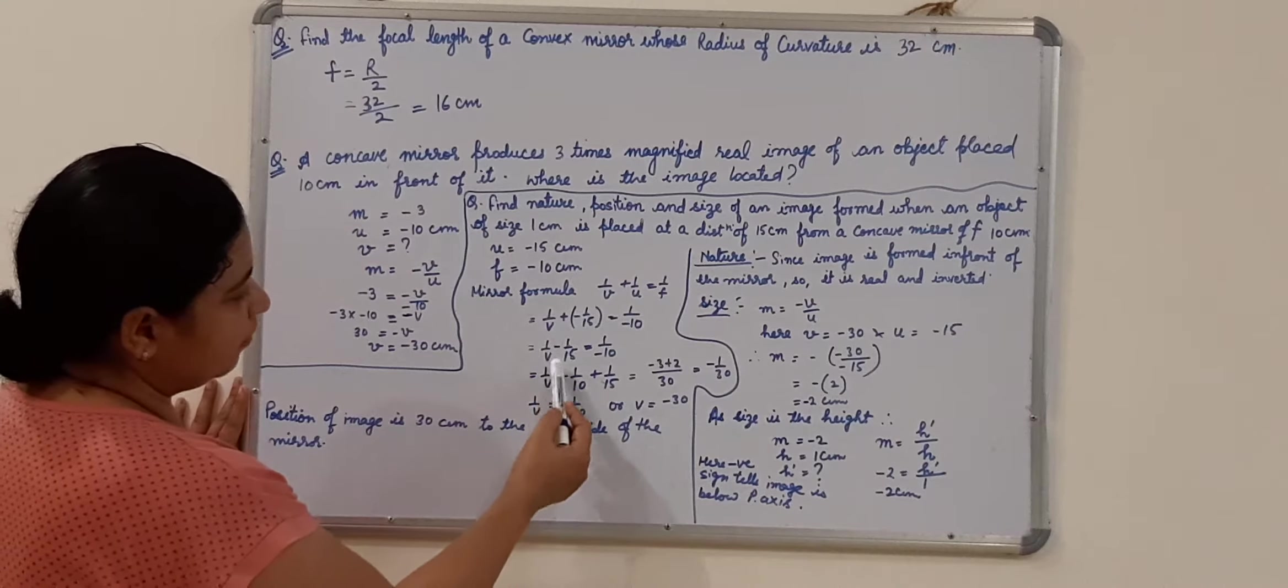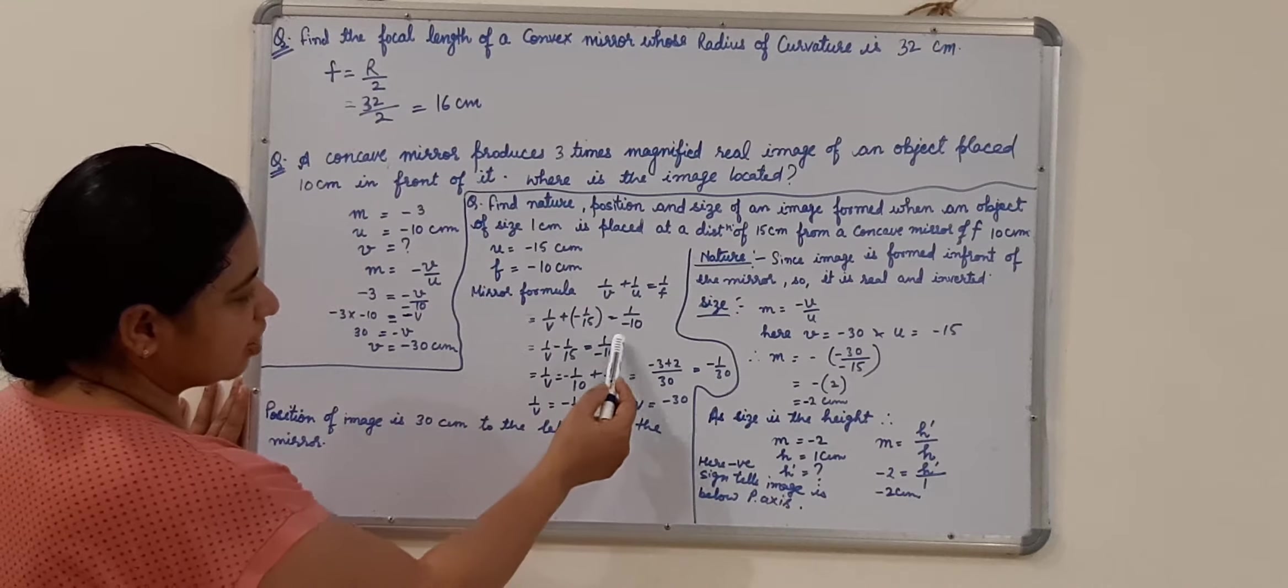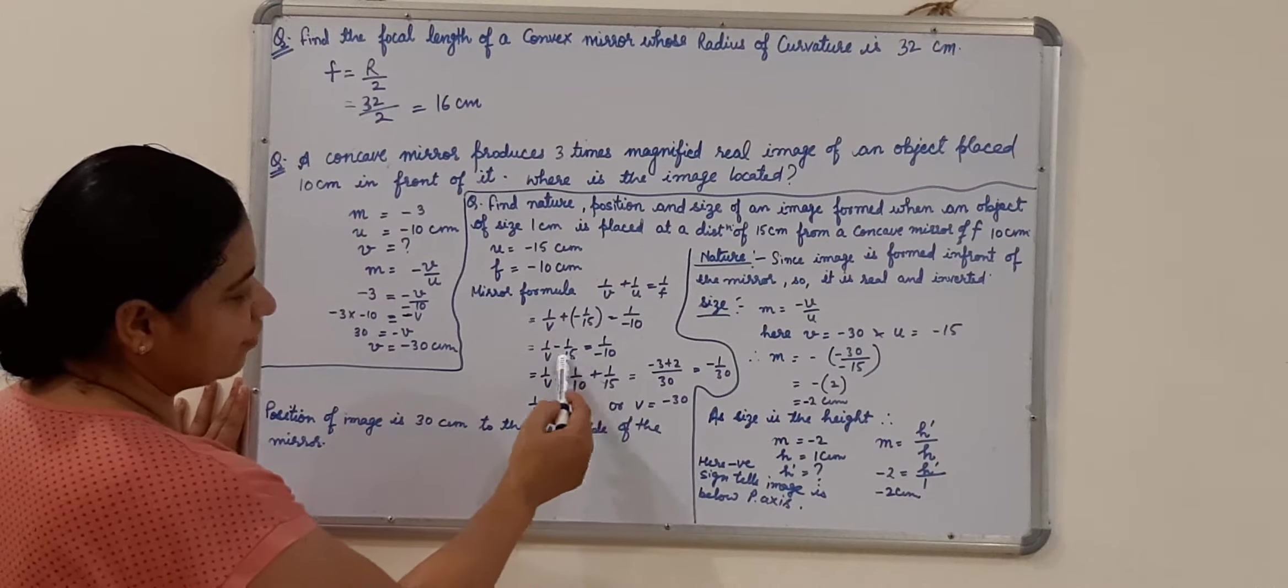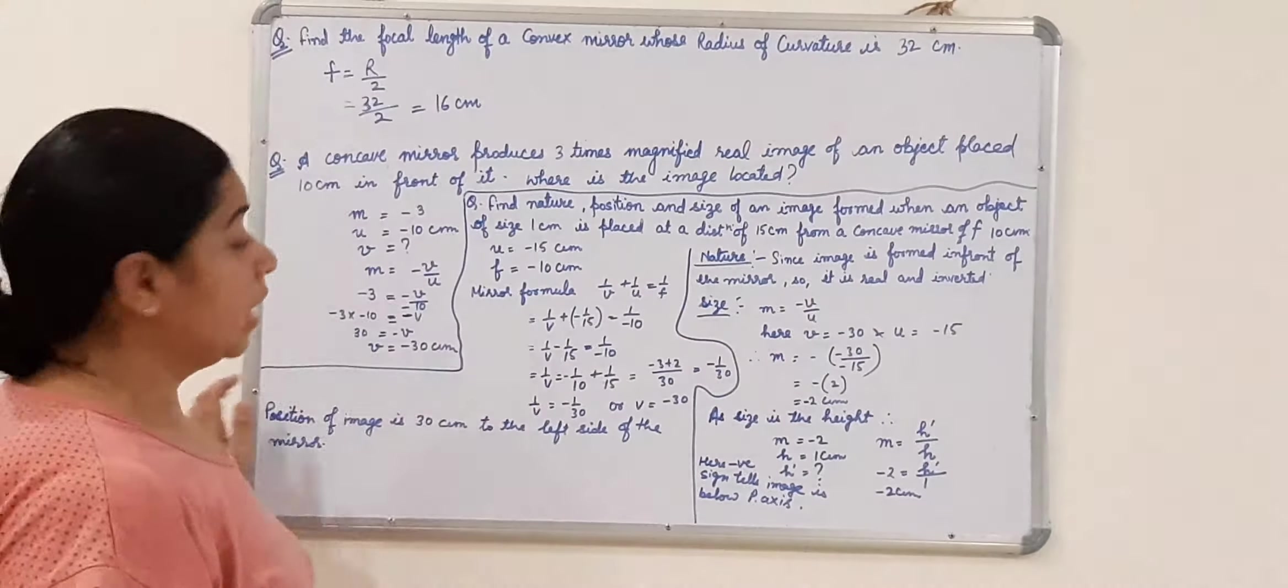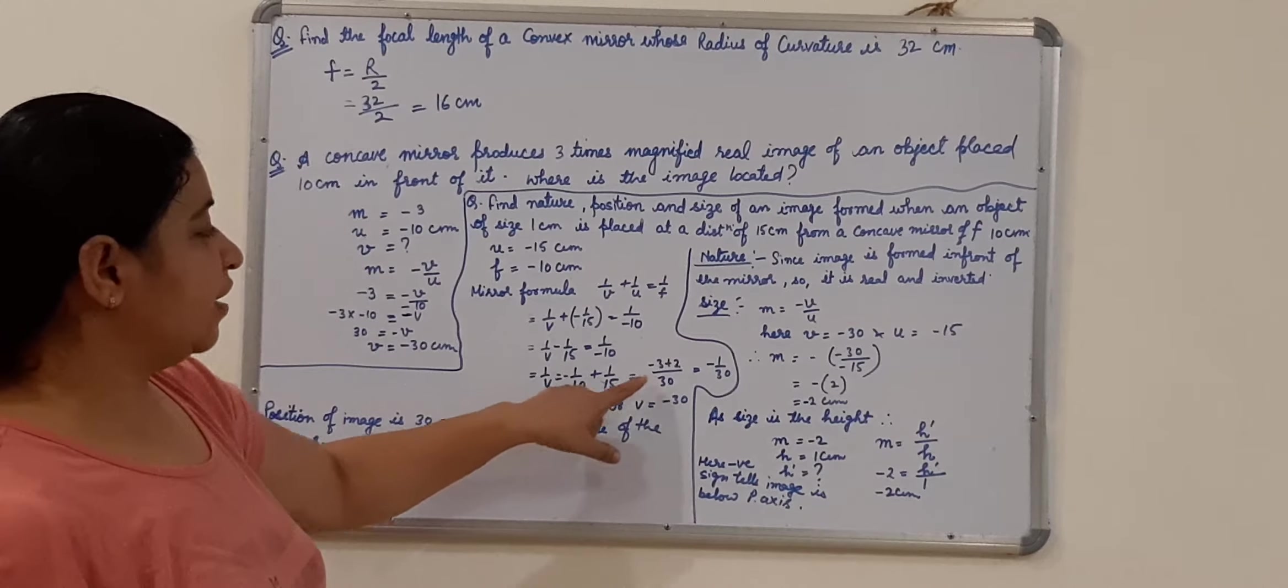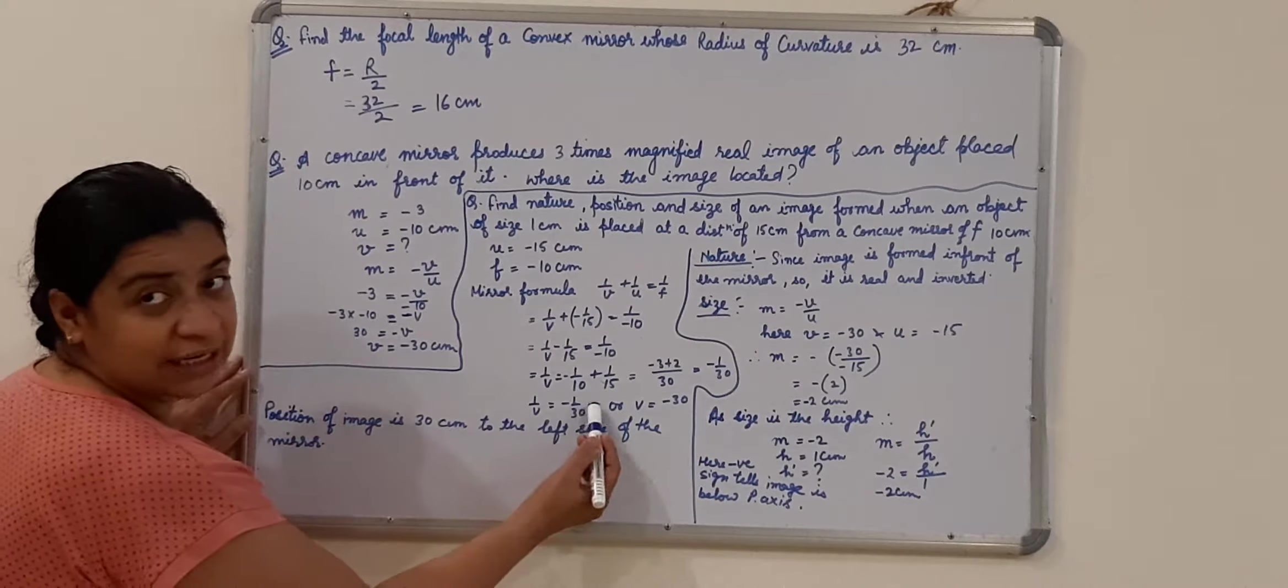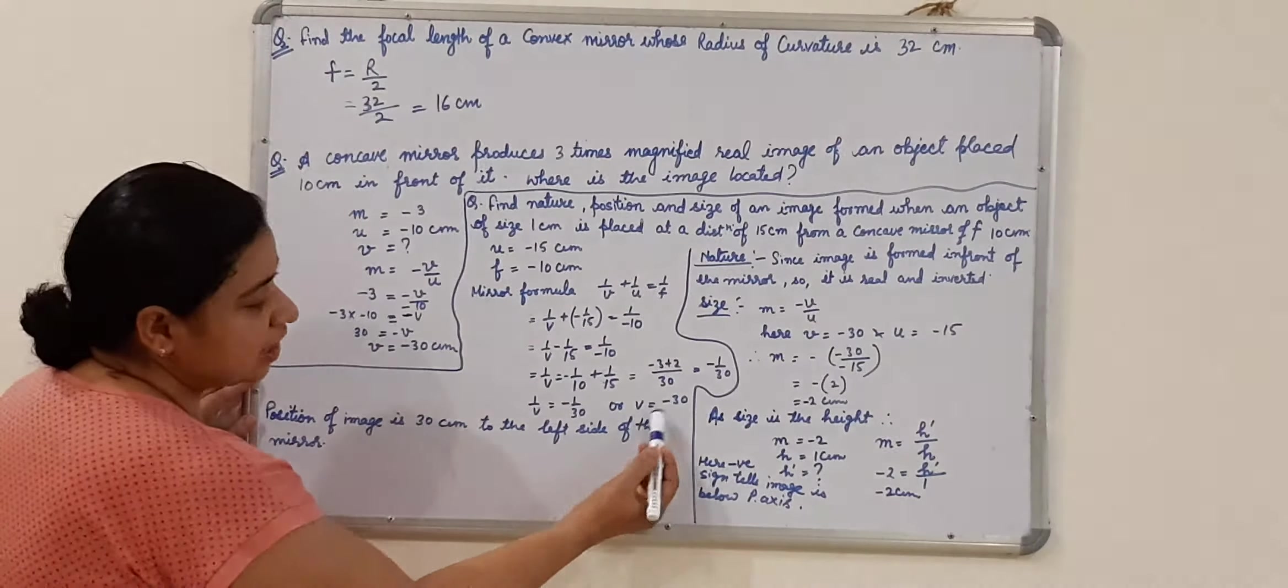So, solving this, 1 upon V minus, when I open the bracket, I get minus 1 upon 15 is equals to minus 1 upon 10. I take this 15 on that side, 1 upon 15. So I will get 1 upon V is equals to minus 1 upon 10 plus 1 upon 15. Take the LCM and we got the value of V, 1 upon V is equals to minus 1 upon 30. So, V is equals to minus 30.